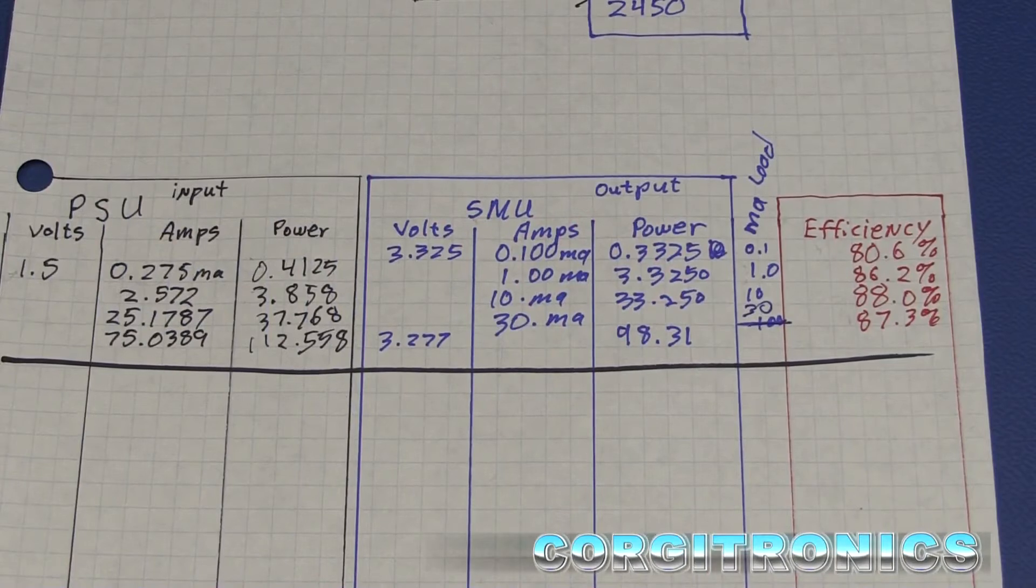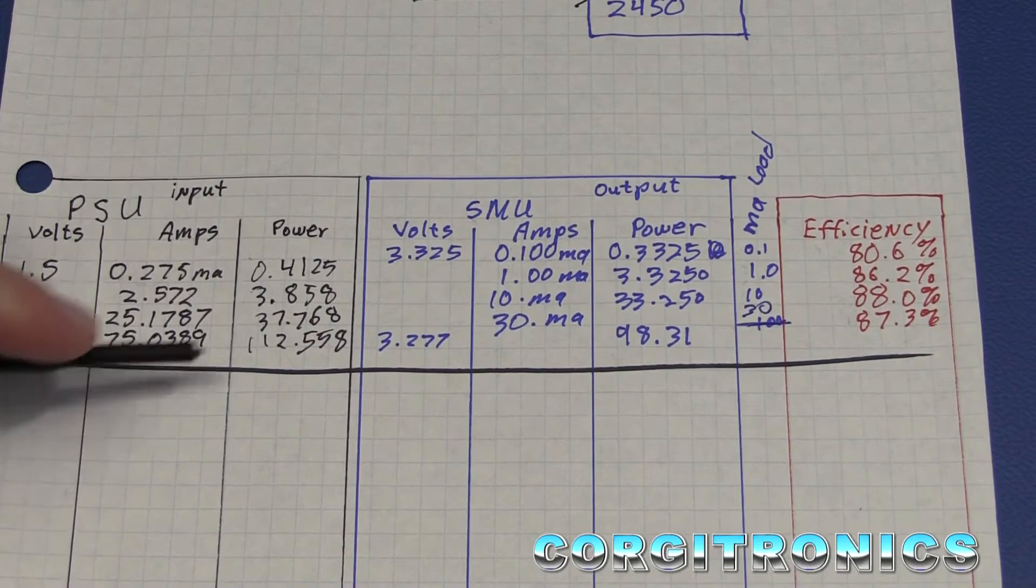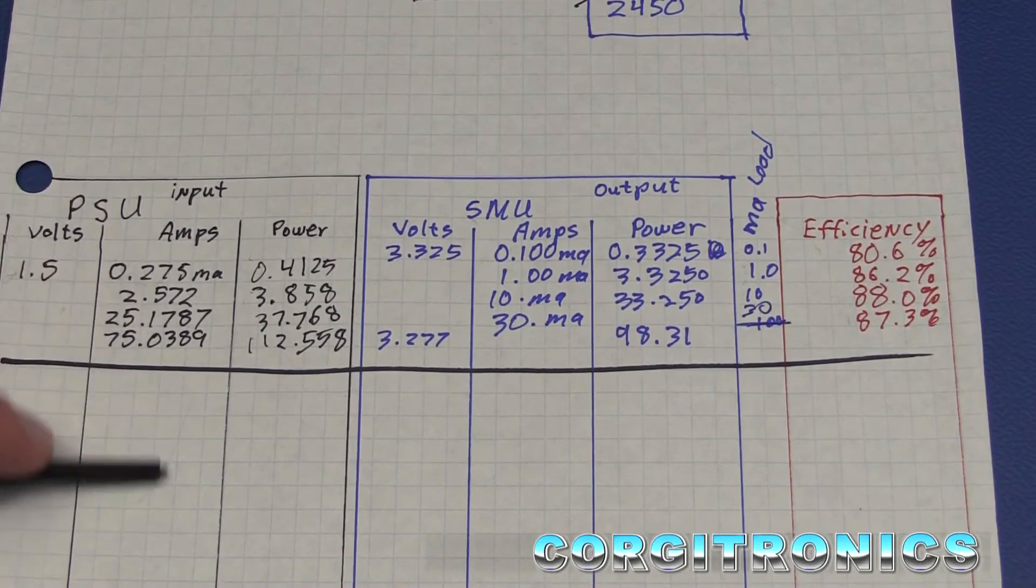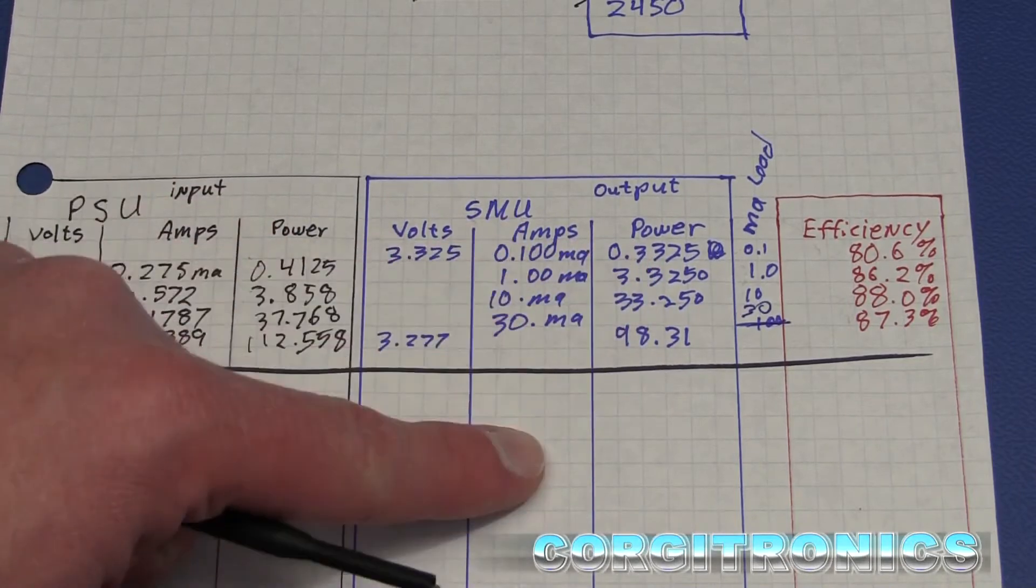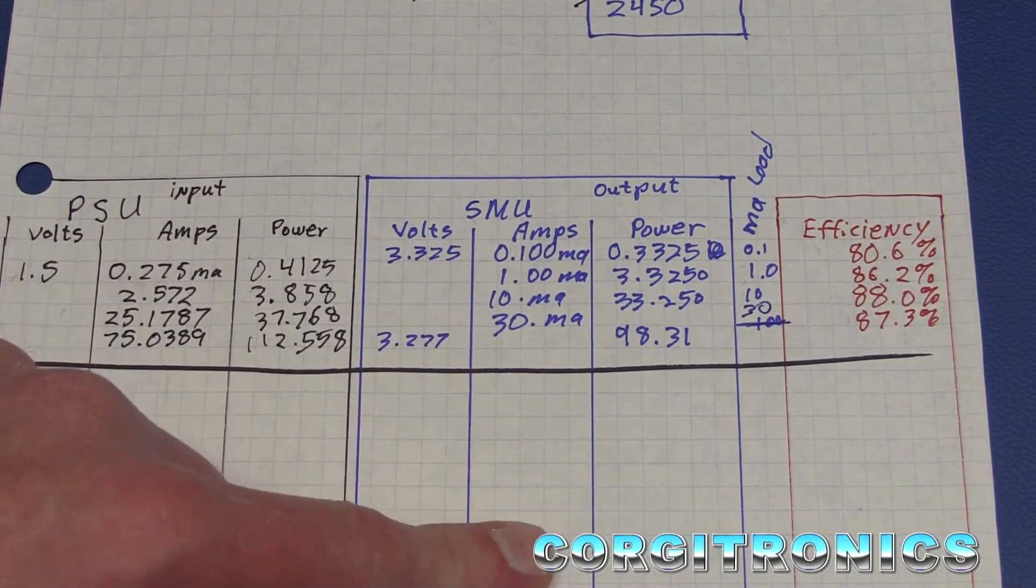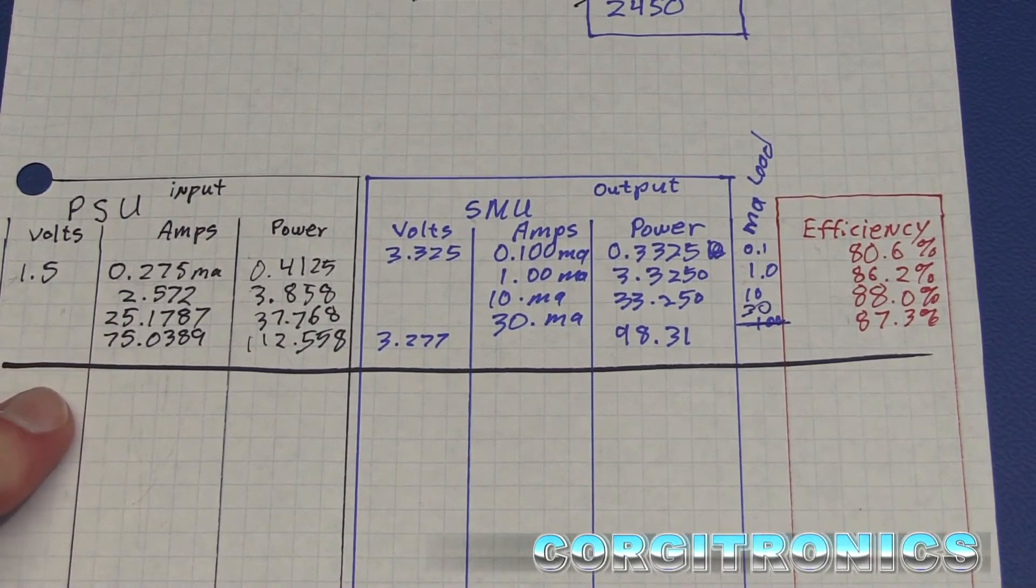That's at a 1.5 volt input. Now to do another input voltage, do the range of all the ampere measurements - measure the input amps for each of these load currents and see how it does all the way down to what I think my dropout voltage would be, of about 0.7 or 0.8 volts input. Well, that could take a while. There's got to be a better way.